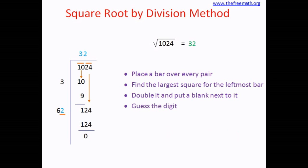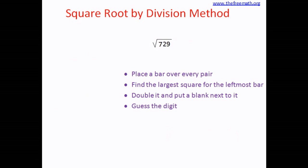Let us take one more example: the square root of 729. Consider 729 for division. Start pairing the digits from the right hand side — the first pair is 29. The second group has only 1 digit, which is 7, and that is okay — you can have a group of only 1 digit. Now consider 7 for division. Find the largest square smaller than 7: 2 times 2 is 4. Divide 7 by 2; the quotient is 2. 2 twos are 4. Subtract 4 from 7, so the remainder is 3.